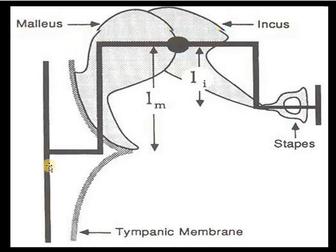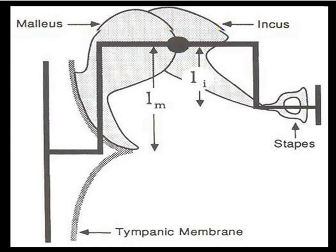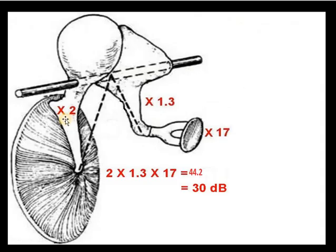We can see here this is the malleus. This is the sound coming from the environment through the external auditory canal going to the tympanic membrane. Then to the malleus — this is the axis of rotation of the malleus and incus, and the sound goes through the stapes footplate. The effective length ratio of the malleus to incus is around 1.3, and this acts as the fulcrum. Therefore, the total mechanical advantage produced by this mechanism is 1.3 times. The catenary lever action provides around a 2-fold increment in sound intensity, and the effective vibration area of the tympanic membrane to the stapes footplate gives a gain of around 17 times. The stapes footplate, being smaller than the tympanic membrane, helps to concentrate the sound, giving around 30 decibels gain in hearing.